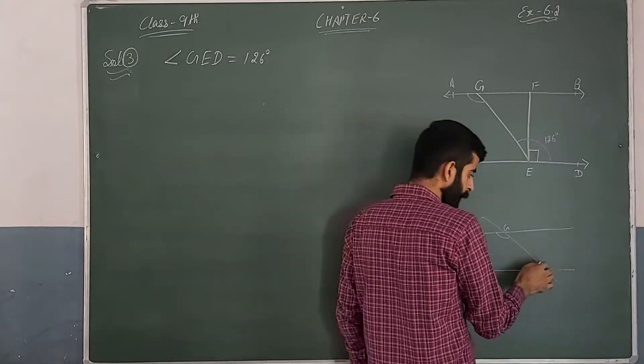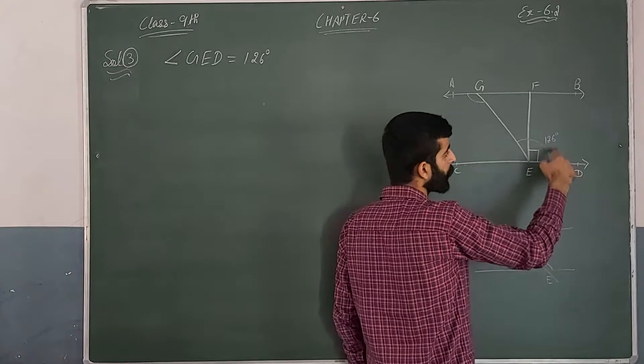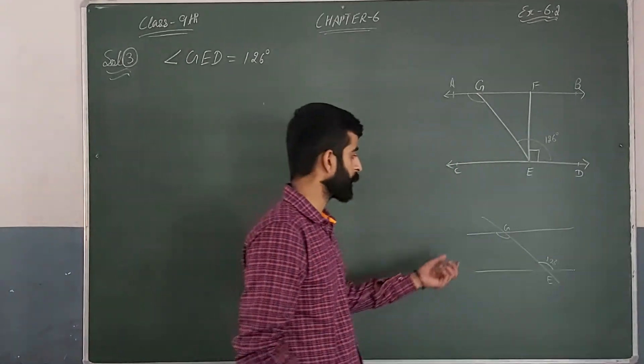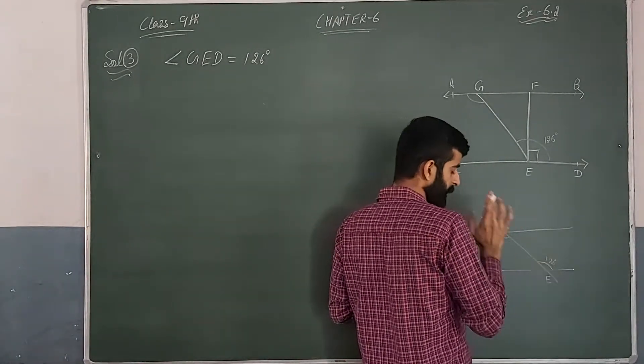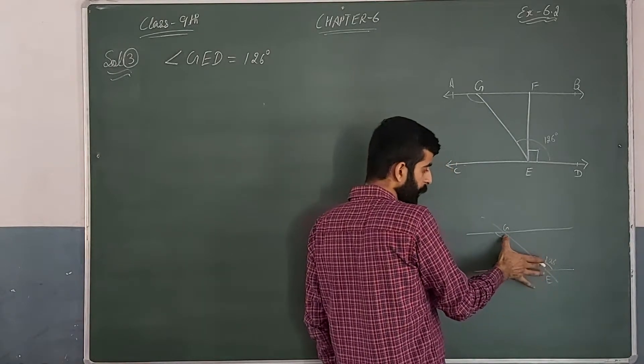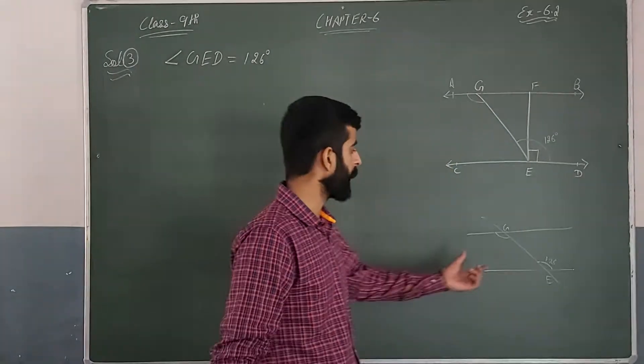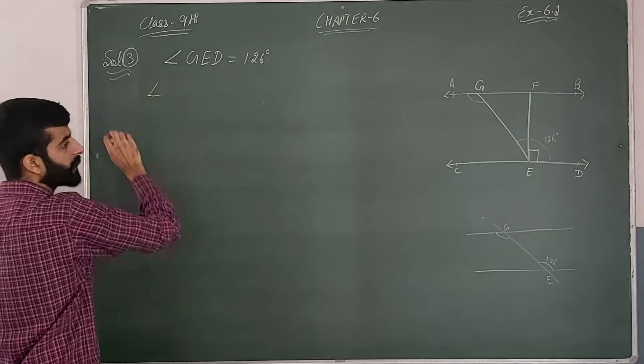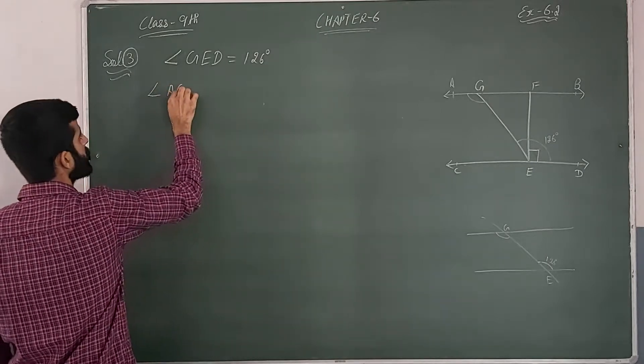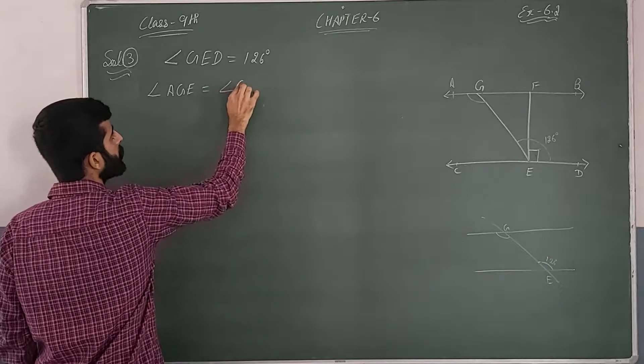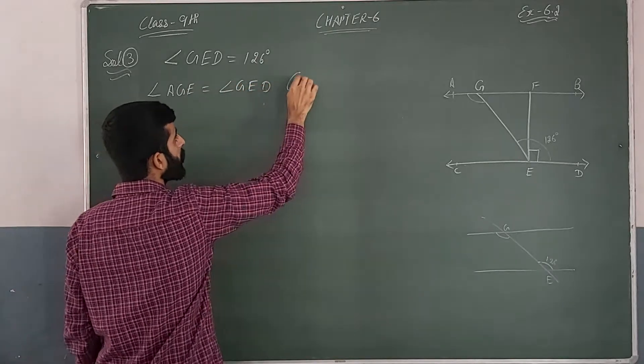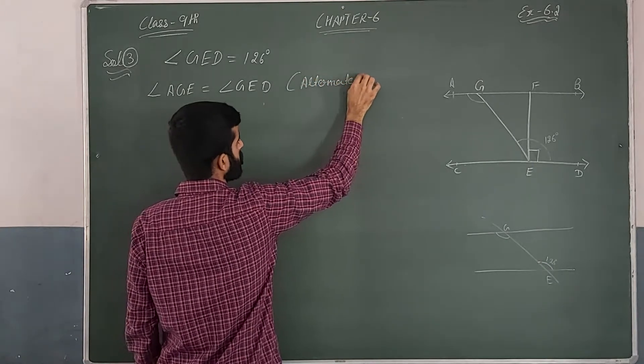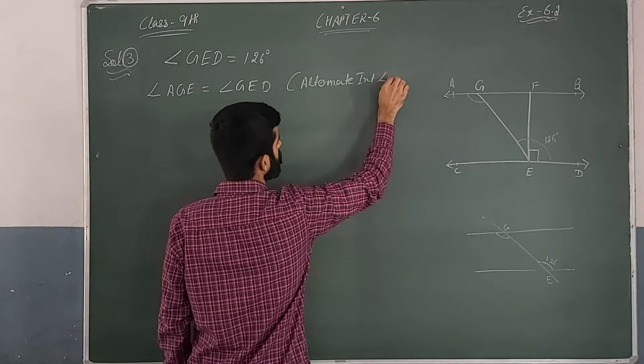The way you take this one is angle AGE is equal to angle GED. Why? Because they are alternate interior angles.